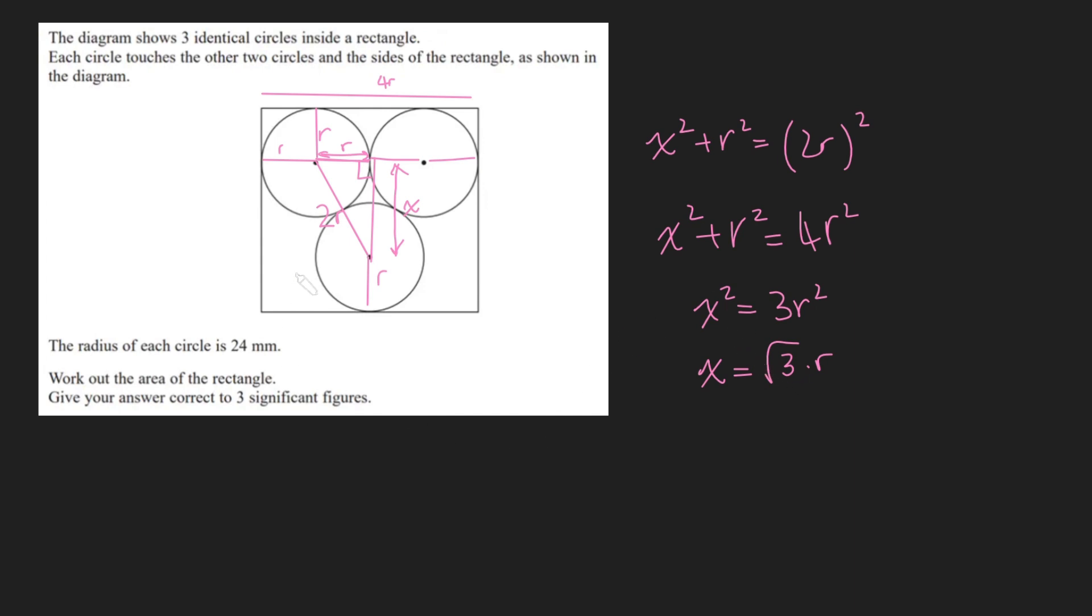So X there is just root 3 times R. Perfect. So what is the height of this rectangle? It's just going to be R plus root 3R plus another R. So 2R plus root 3R, or in other words, 2 plus root 3R.